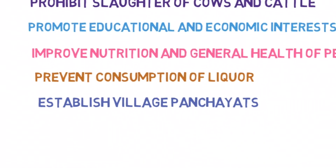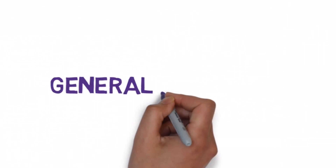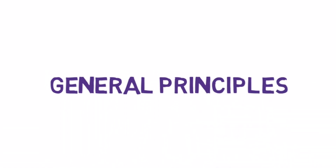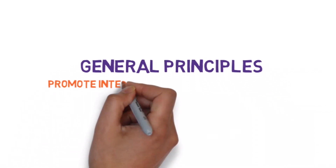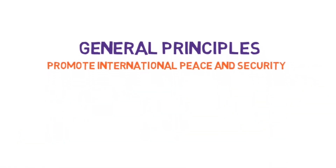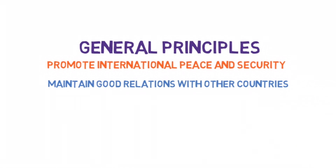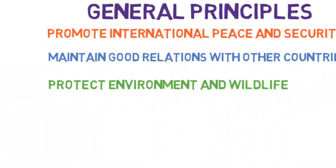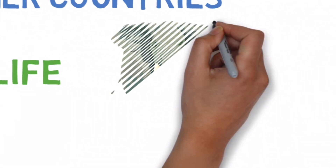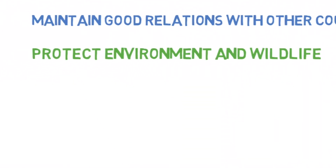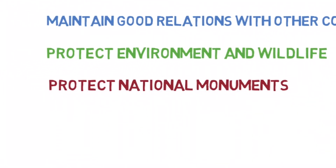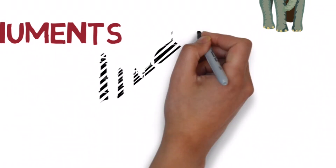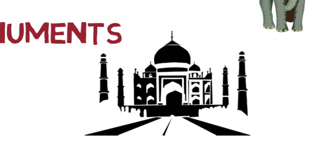The third category of general principles includes directives regarding matters of justice, environment, monuments and foreign policies. Some of the directives included are: promote international peace and security, maintain just and honorable relations with other countries, protect and improve the environment and safeguard forests and wildlife, and also protect national monuments, places and objects of national importance.